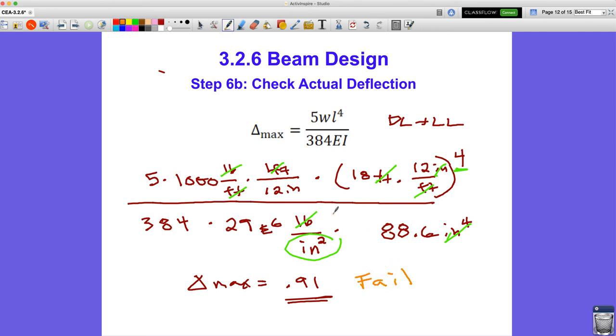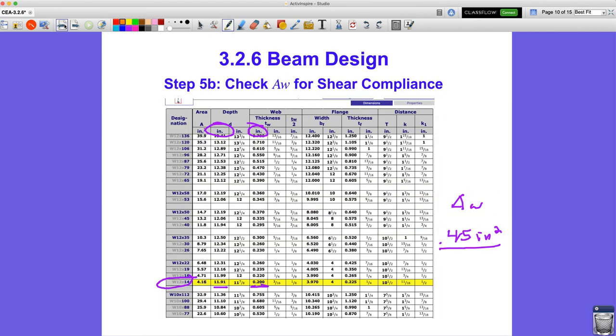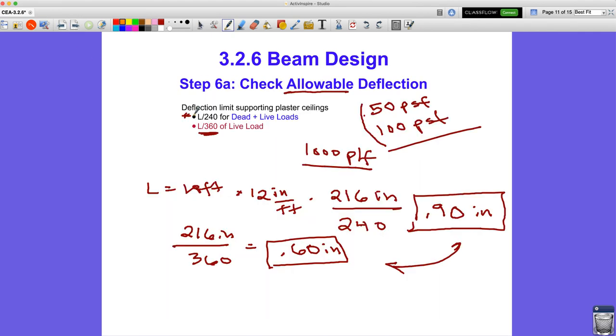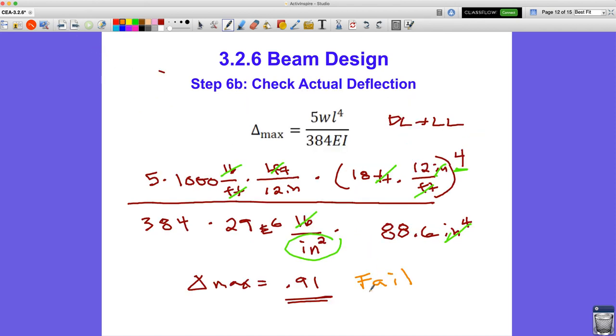Of course, if we didn't have a plaster ceiling, we would have less restrictive limits. I don't know if you remember, but it's 180 and 240 here for non-plaster ceilings. Those probably would have been fine, but it's clearly said plaster ceilings. So we fail here.